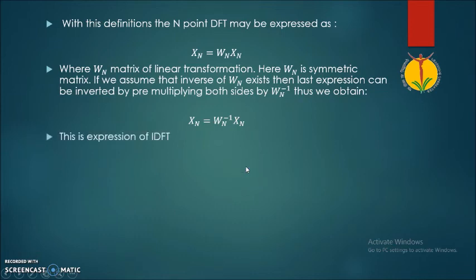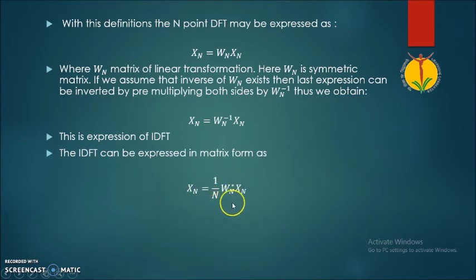But this is just expression of the IDFT. In fact, IDFT can be expressed in matrix form as x(n) equals 1 upon N, WN star into xN. Here this term is the complex conjugate of the matrix WN.